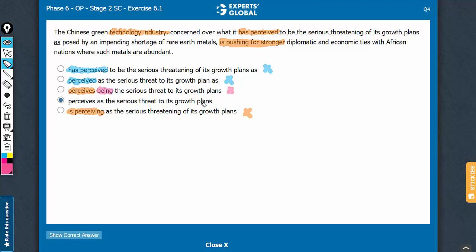Let's confirm choice D. The Chinese green technology industry concerned over what it perceives as. And remember, perceives as is a correct idiomatic usage. So answer choices which do not use perceive as construction are incorrect for one more reason. So choice C can be eliminated for one more reason.